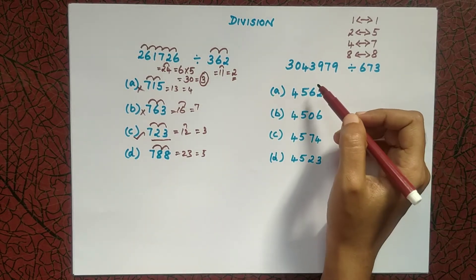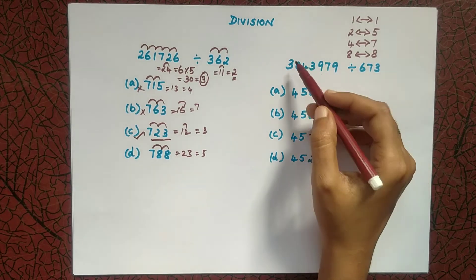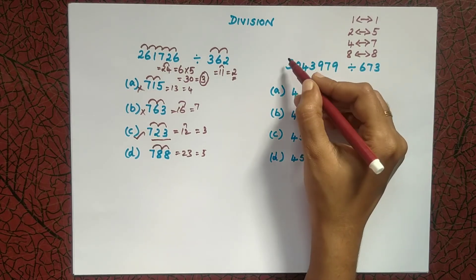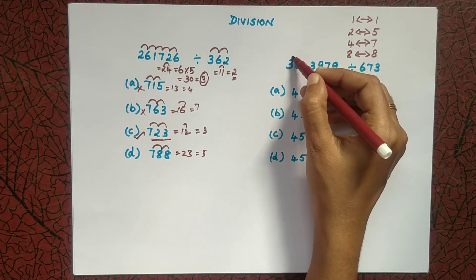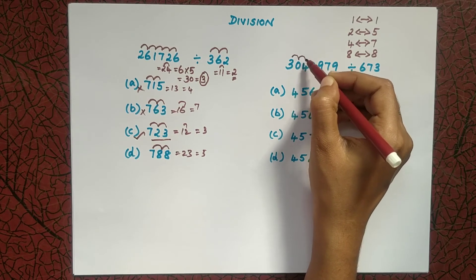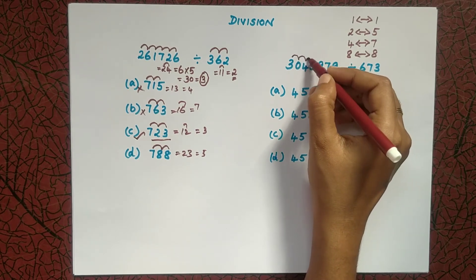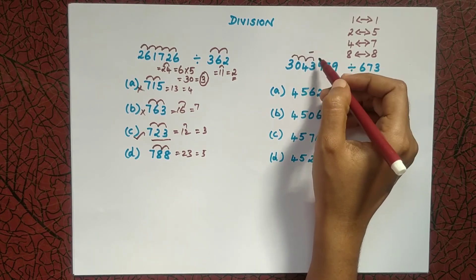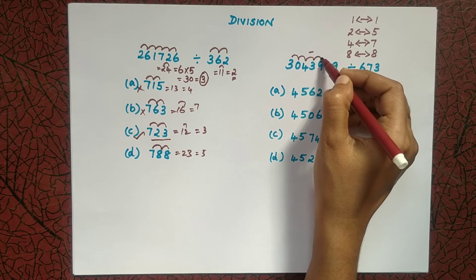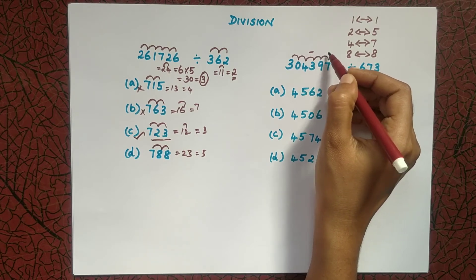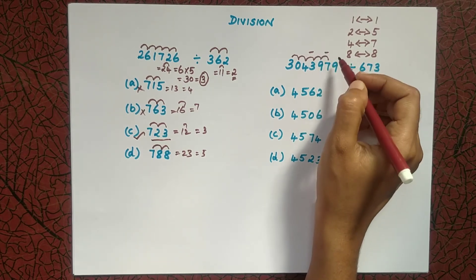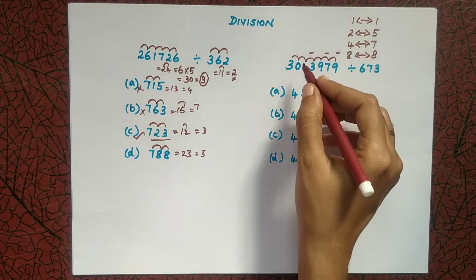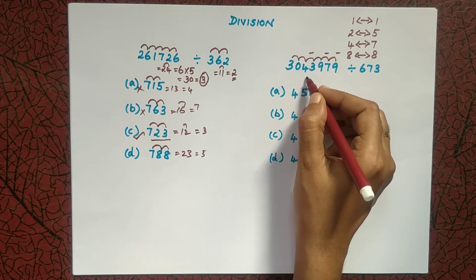Now let's solve this second example using the same trick. We are going to find the quotient of this division. Starting with the dividend digits: 3, 0, 0 — then 3 plus 4 is 7, 7 plus 3 is 10, so we use the addition trick: one carry and remainder 0. Then 0 plus 9 is 9, 9 plus 7 is 16, giving 6.